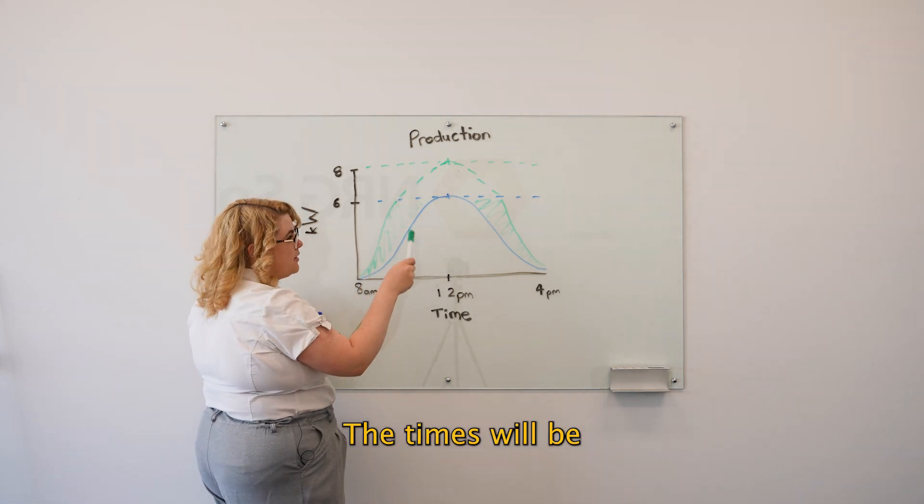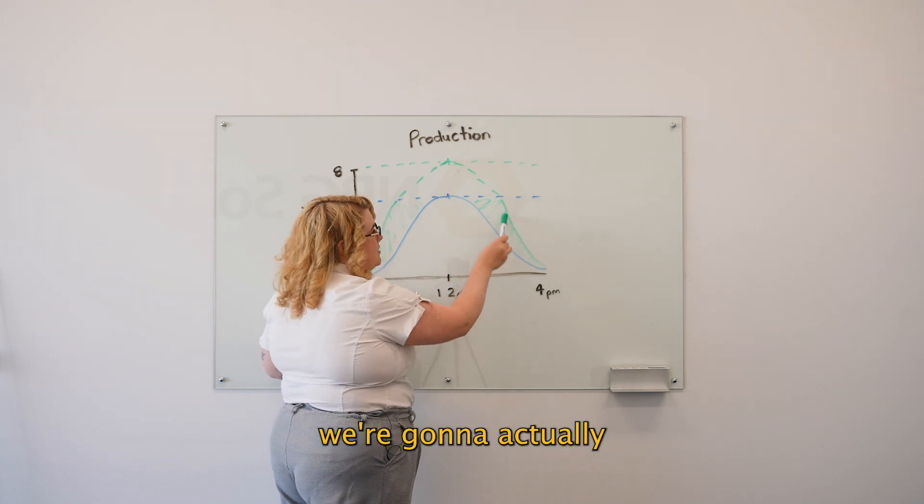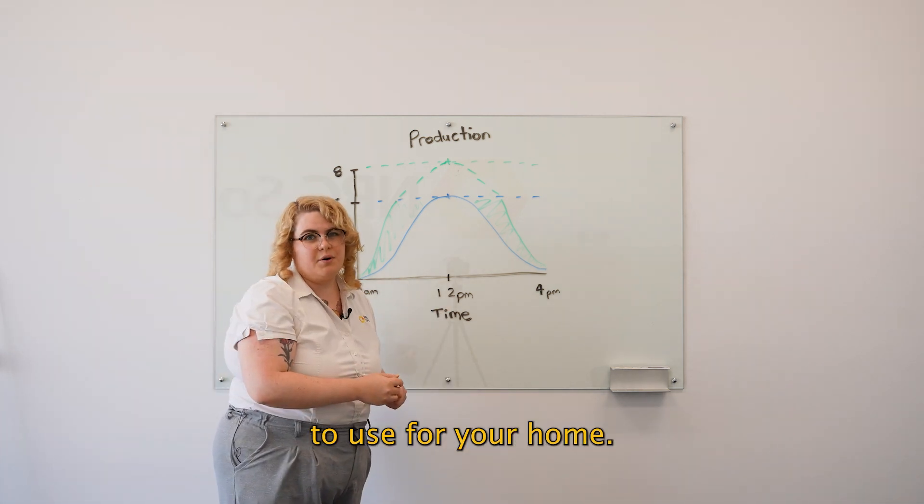Depending on the time of year, the times will be a little bit different, and same with the afternoon. Way later in the afternoon we're going to actually be pulling down that maximum amount, so it's heaps of extra power that you actually get to use for your home.